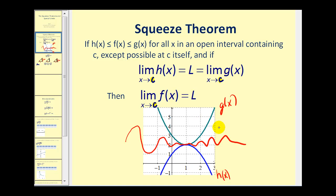Then in this case, if the limit of h and g as x approaches one is equal to two, we could also conclude that the limit as x approaches one of f of x is also equal to two.